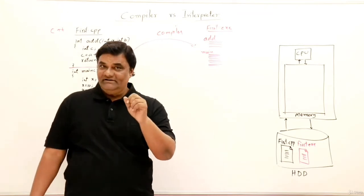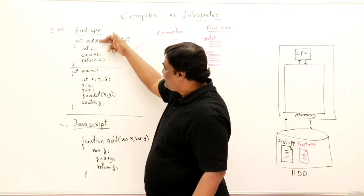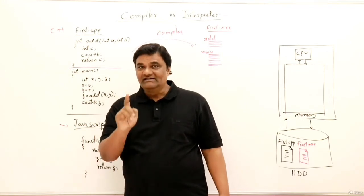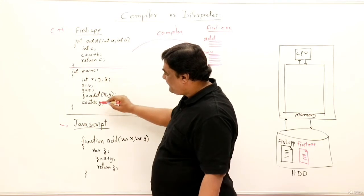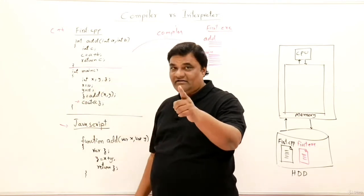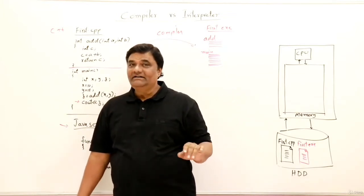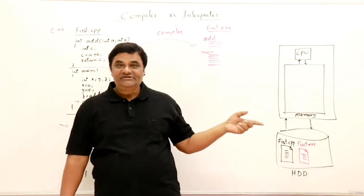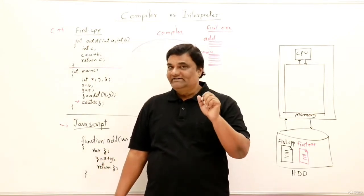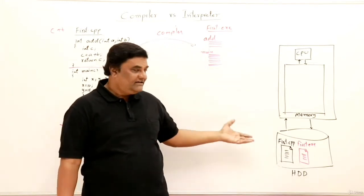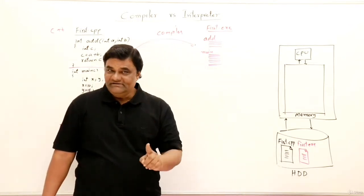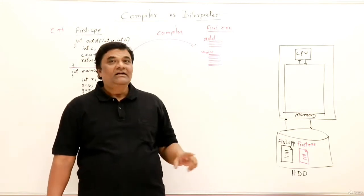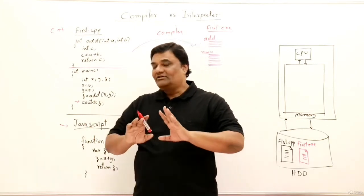One more important point about a compiler: suppose there are ten to fifteen lines and the fifth line has an error. Your program will not get compiled at all, even though the first four lines are correct. The compiler has to generate complete machine code, so it cannot proceed with any error. If there is any error in any line, the program will not get compiled.